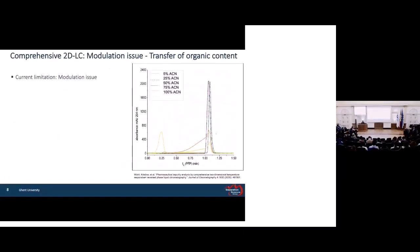What is the modulation problem? In a comprehensive system, when the sample transfers from the first dimension to the second dimension, it contains mobile phase. If this mobile phase is stronger than the mobile phase in the second dimension, it can affect the peak shape and retention time of the peak in the second dimension. This is an example of the modulation problem prepared by one of my colleagues, where RPLC was used in both dimensions — and when a high concentration of organic solvent transferred to the second dimension, the peak shape and retention time were changed. So we have to find two compatible techniques for use in comprehensive LC, and since we are going to use RPLC in the second dimension, we need one technique compatible with RPLC.